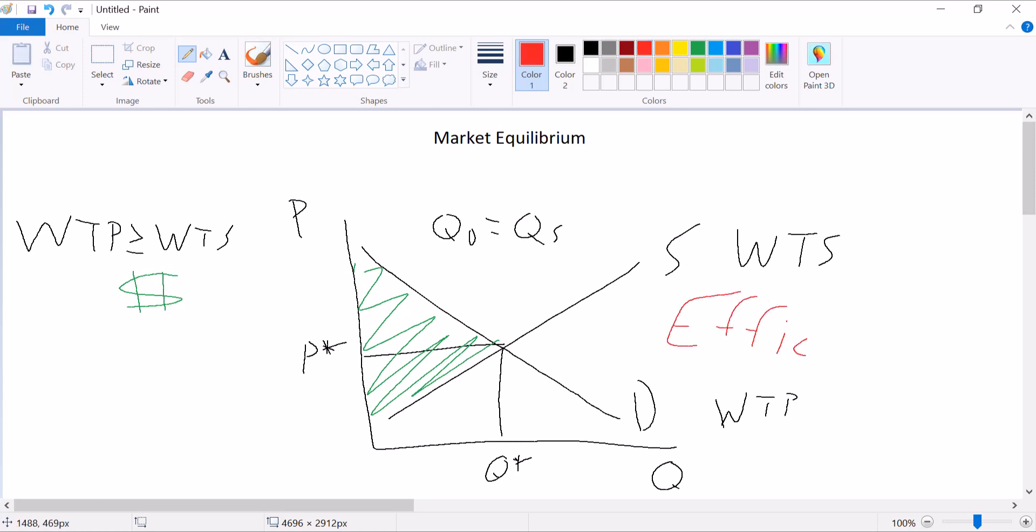Because in equilibrium, there is no way to improve the position of a buyer without harming a seller. And there's no way to improve the position of a seller without harming a buyer. Everyone is as well off as possible. And there's no reason for anyone to change what they're doing at this price and at this quantity.